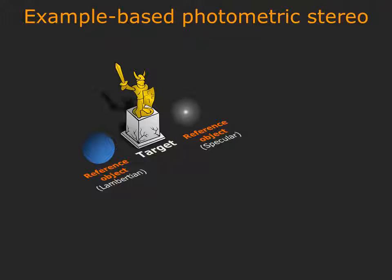Our work relies on example-based photometric stereo, which introduces reference objects with known shape and reflectance into a scene. Example-based photometric stereo works by comparing the intensity variations at a pixel to those on the reference object.